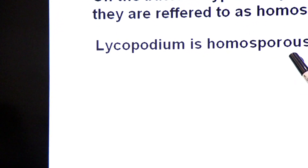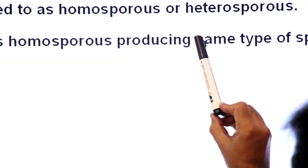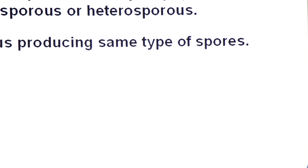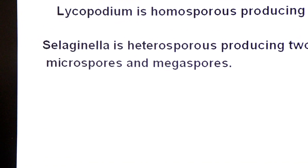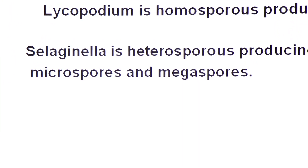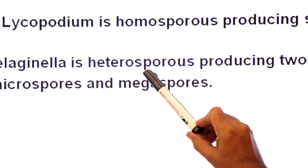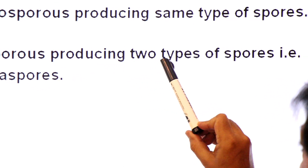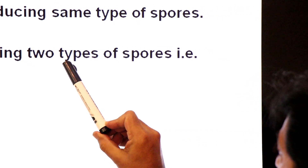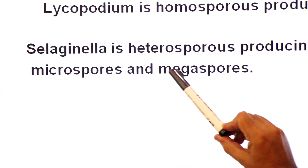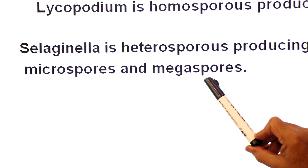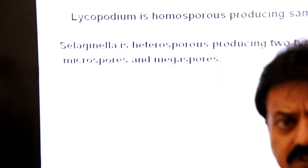Lycopodium is homosporous, producing the same type of spores. Selaginella is another genus of this class and is heterosporous, producing two types of spores: microspores which are smaller in size, and megaspores which are larger in size.